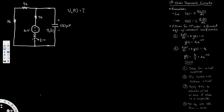In this video we are going to see an example on first-order transient circuits. The question is asking us to find the voltage across the capacitor after we open the switch.